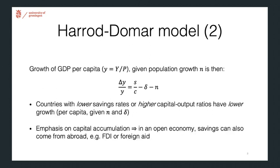We can express this in equation form. The growth rate of GDP per capita, given here by lowercase y, is given by the following equation. So countries with lower savings rates or higher capital output ratio C will have lower growth per capita. And again, we're talking here about a closed economy where the savings in the economy are necessary to build up new capital.